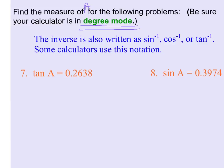I talked about in the last video that the inverse is written with these little negative one. So sine, cosine, and tangent when they are inverses have a little negative one in the upper right hand corner. And if we're going to do a problem like number seven where it says tan of A equals 0.2638, what we want to do is we want to think of that as the inverse tan of 0.2638. And that's exactly what you enter on your calculator.